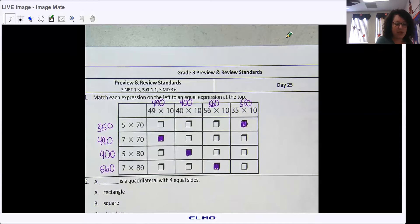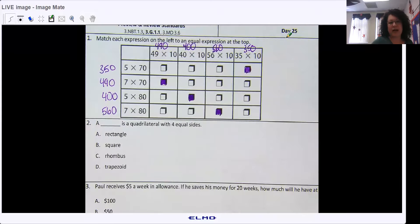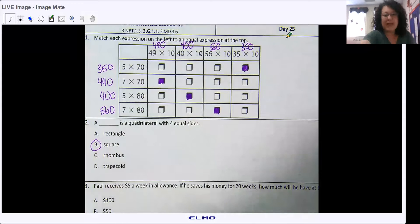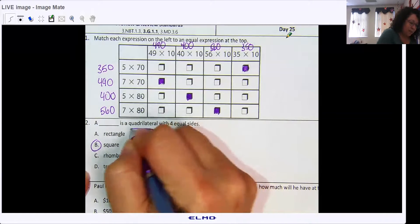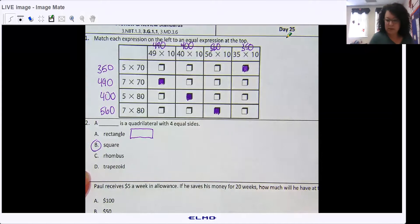All right, number two. A blank is a quadrilateral with four equal sides. That should be pretty easy. We know that squares have four equal sides. Rectangles can, but they don't always have to. Rhombus and trapezoid does not have four equal sides.